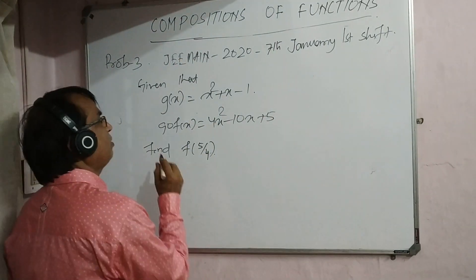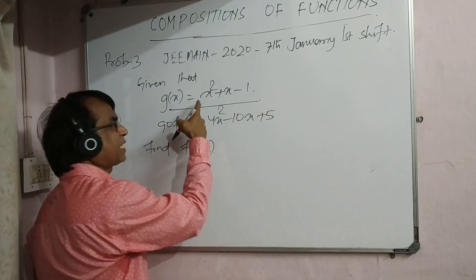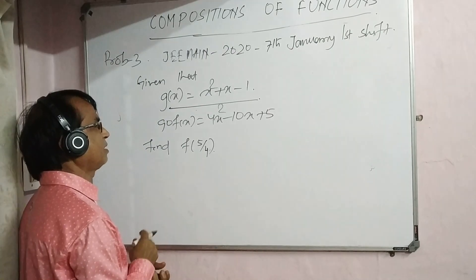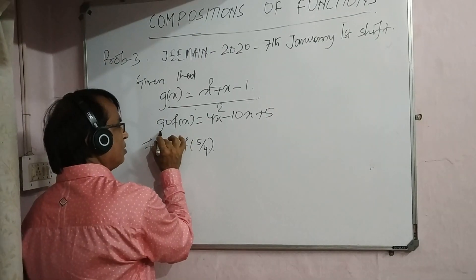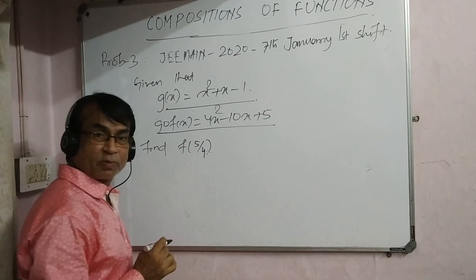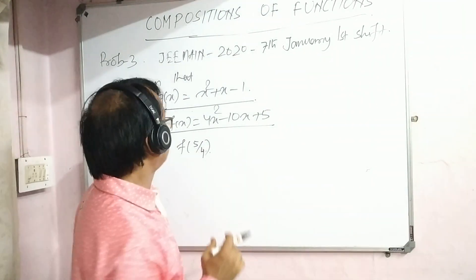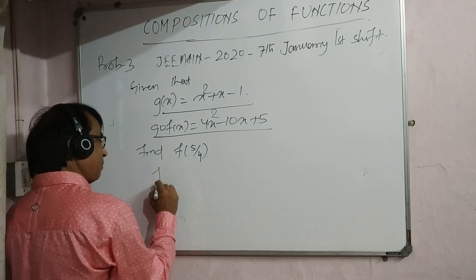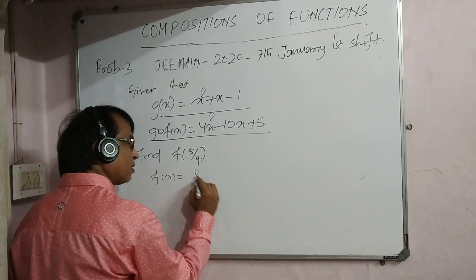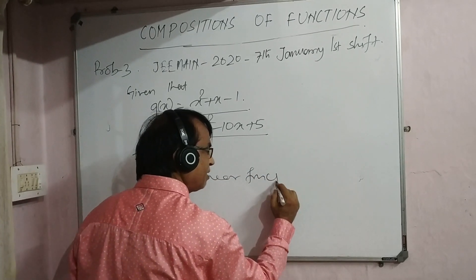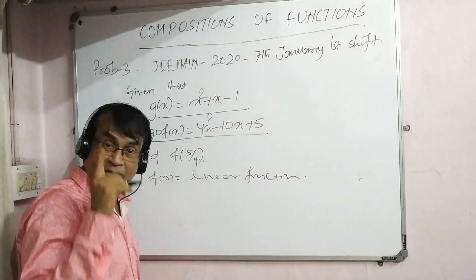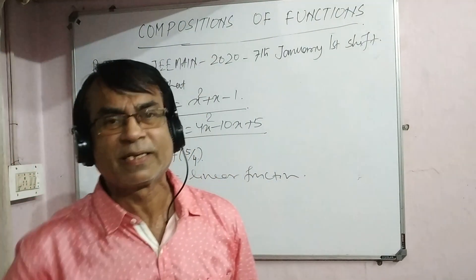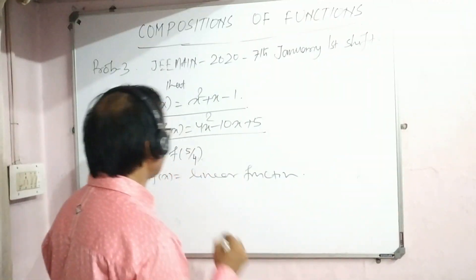Looking at g(x): it is a second degree equation. And g(f(x)) is also a second degree equation. Comparing both, since g(x) is second degree, f(x) must be a linear function — f(x) cannot be a constant and cannot be quadratic or higher. So f(x) is a linear function, and its format is ax + b.